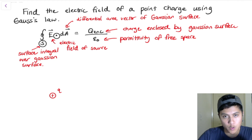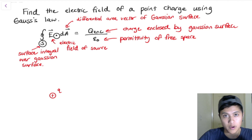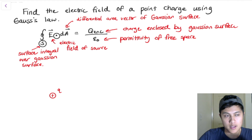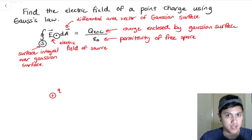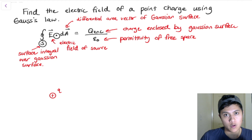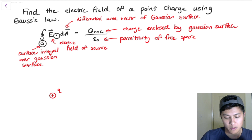First off, we have to pick what our Gaussian surface is going to be. Since we have a point charge, there is a really good reason as to why we should pick a sphere. I'm going to give you an argument as to why we should pick a sphere.